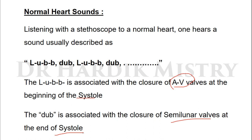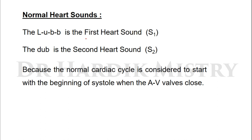The 'lup' is the first heart sound S1 or HS1, and the 'dub' is the second heart sound HS2, because the normal cardiac cycle is considered to start with the beginning of systole when the atrioventricular valves close. To understand these concepts, please visit the video on the cardiac cycle first.